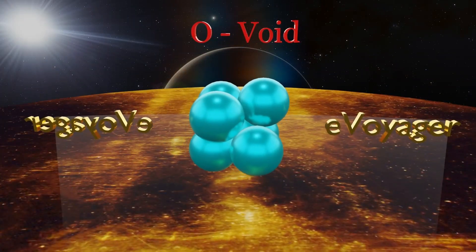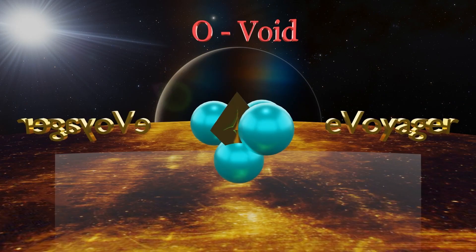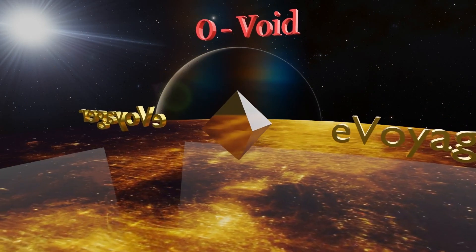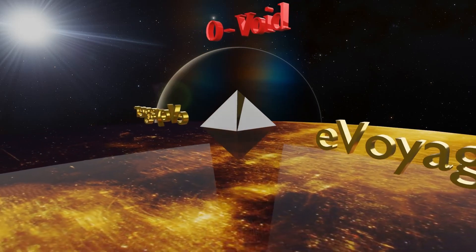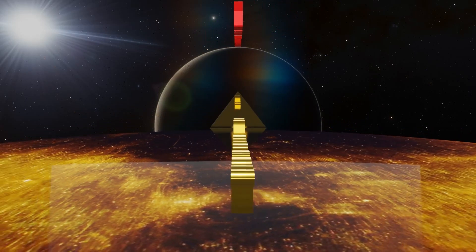If we join the centers of the six atoms, we will get an octahedral space, thus giving this void the name octahedral void.